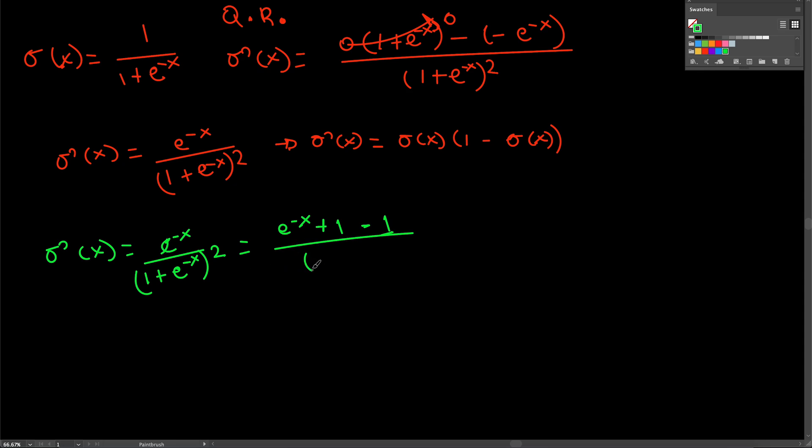And that we divide over the numerator that we have which is 1 plus e to the minus x quantity squared. Now that we can simply separate the fraction. So this is one part of the numerator. This is another part of the numerator. We can just distribute the denominator among all of them.